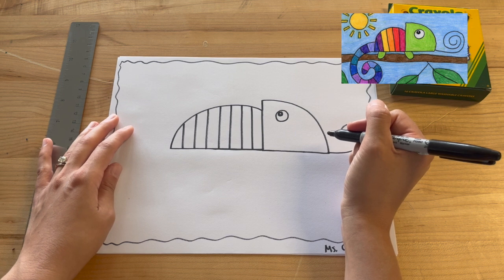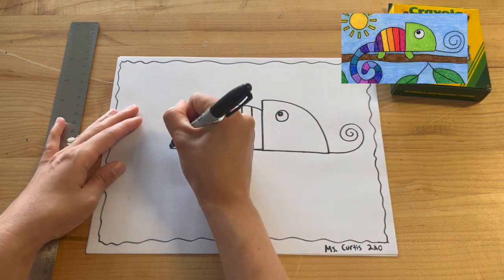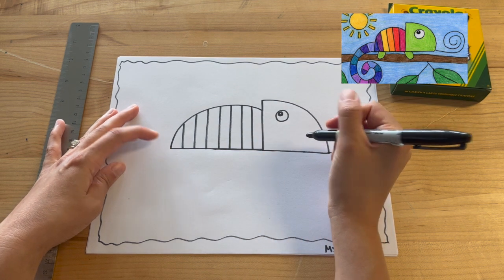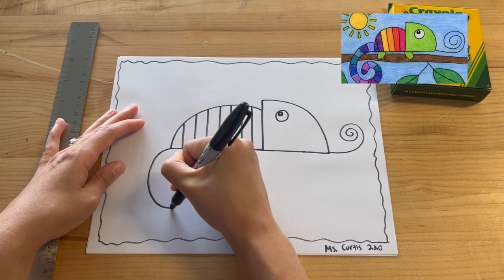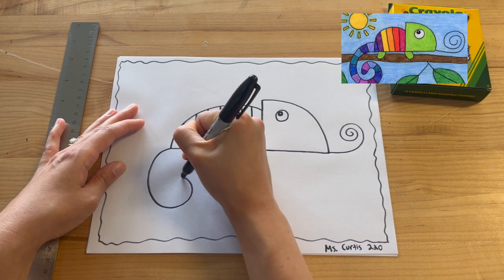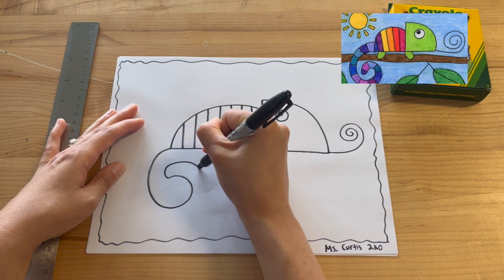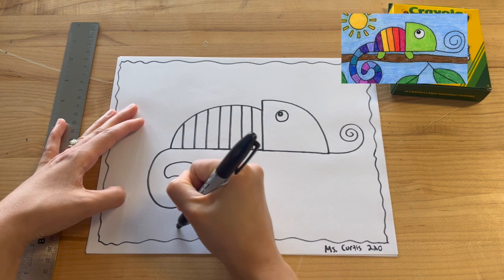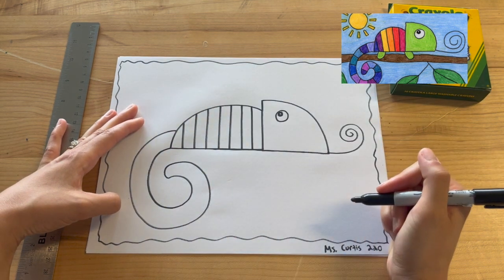So the last thing we're going to do is we're going to add the tail and the legs. So starting at the very bottom of the lizard, I'm just going to make a line that's going to curve and loop around just like this. And then I'm going to swoop it back. And I'm going to come up. And that's going to be our lizard's tail.